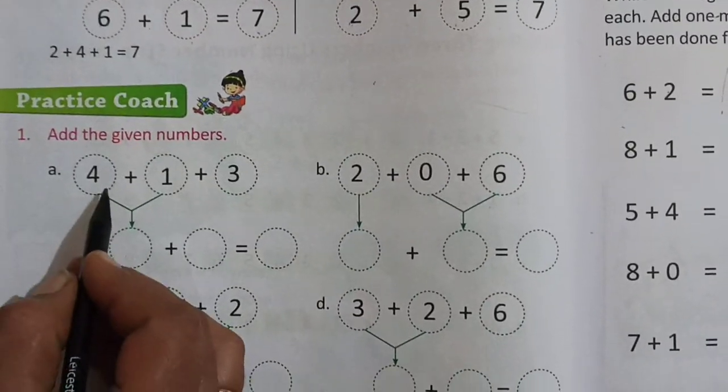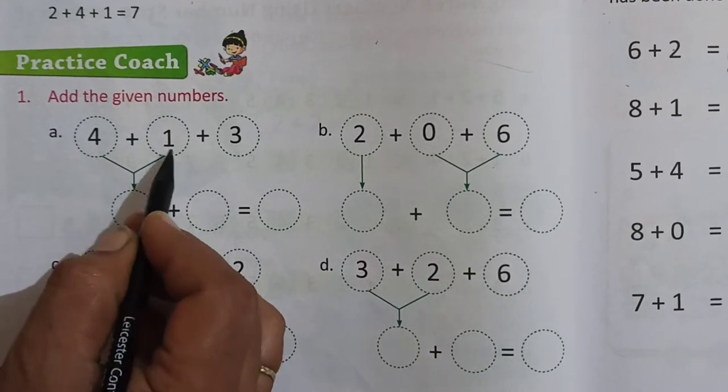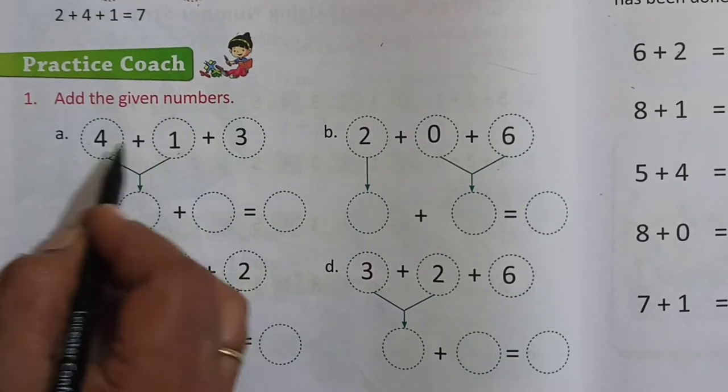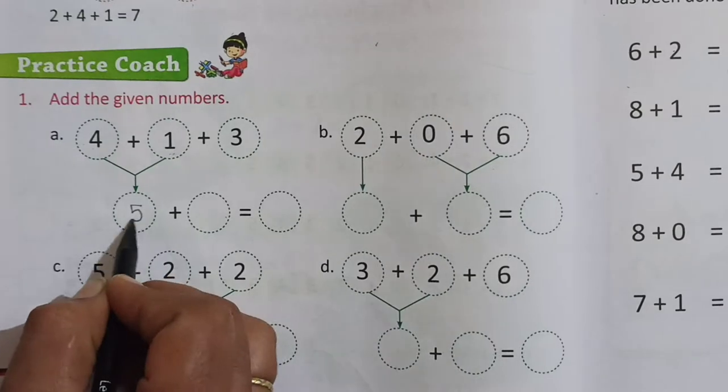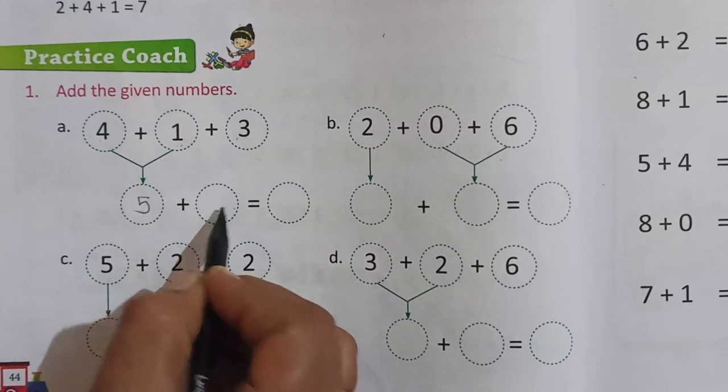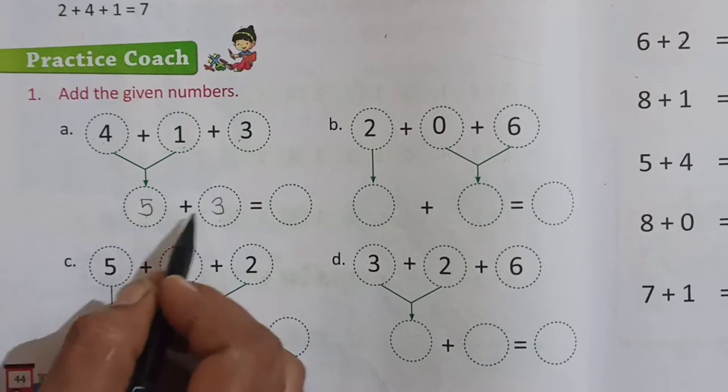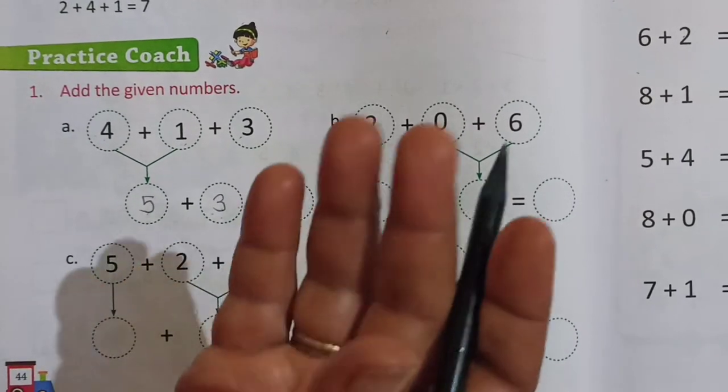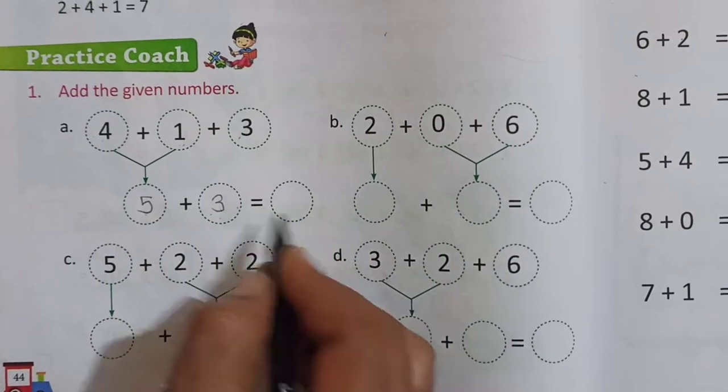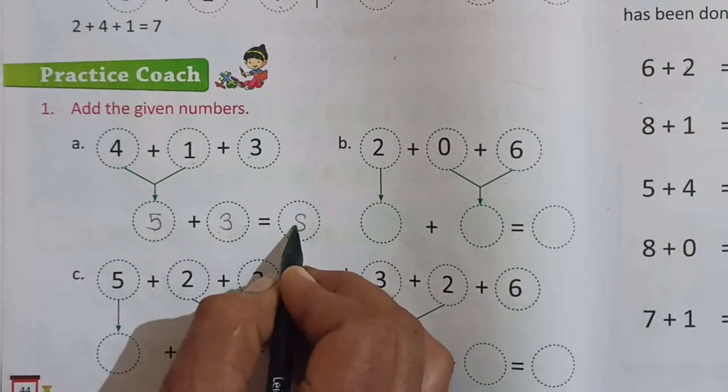Here is a practice coach. Look here. 4 plus 1. After 4, 1 means 5. And then this 3 as it is. And then 5 plus 3. After 5, 3: 6, 7, 8. So 5 plus 3 is equal to 8.